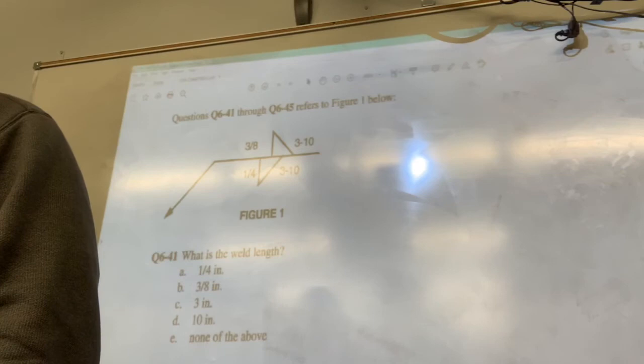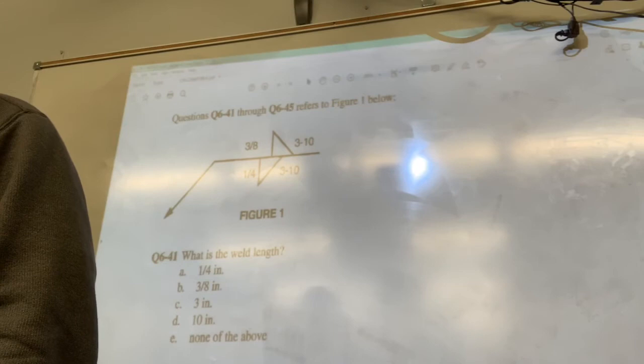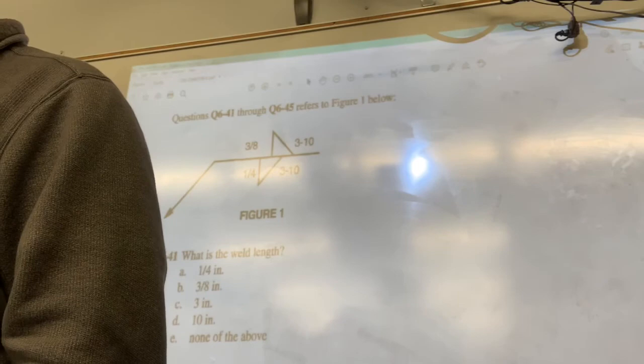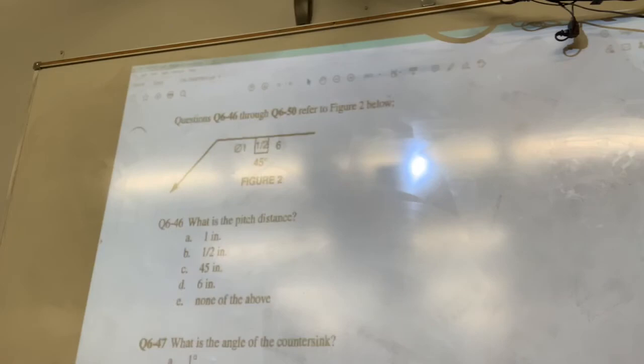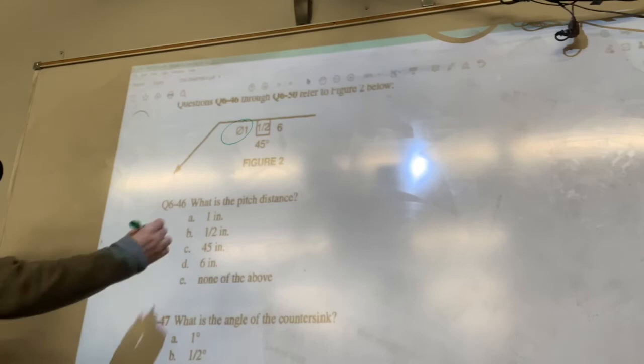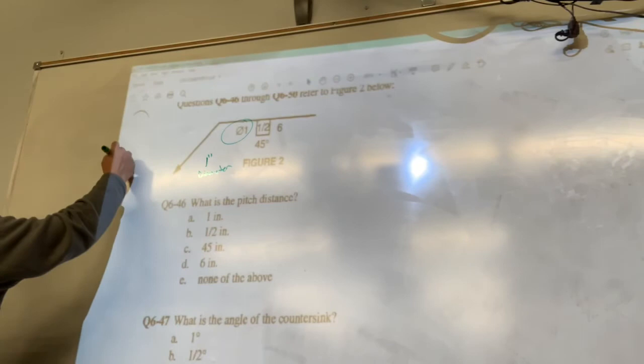46 is D. 47, yeah. 48 is D. 49 is A. 50. 50, I've got, let's see. The reason is, let's go to 50 real quick. See this right here? Right there is denoting the diameter. So that's going to be a one-inch diameter.